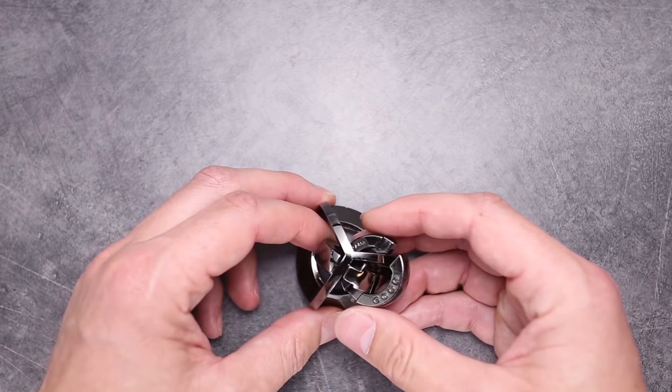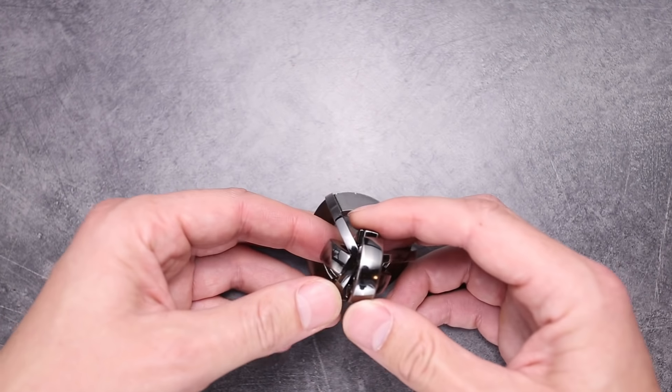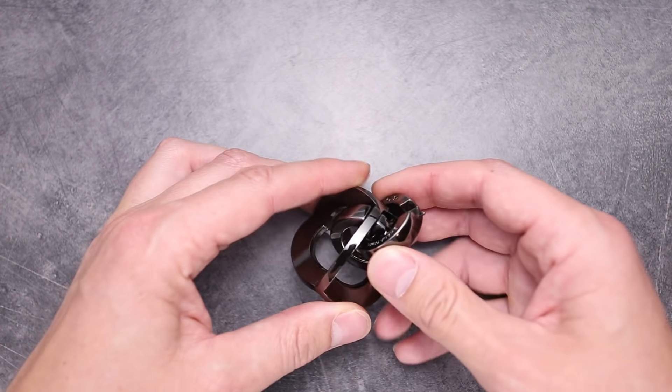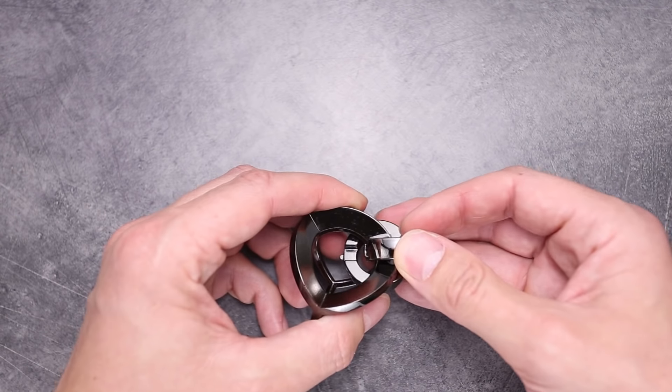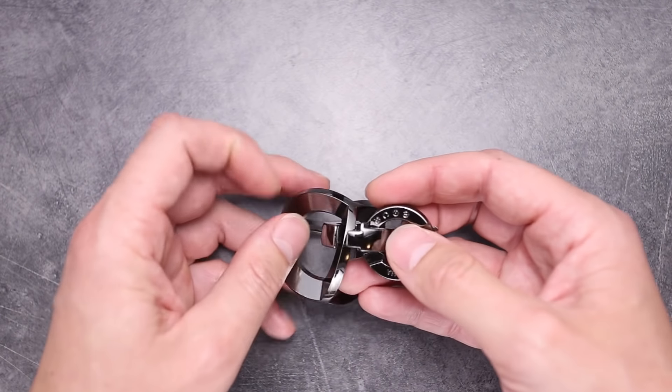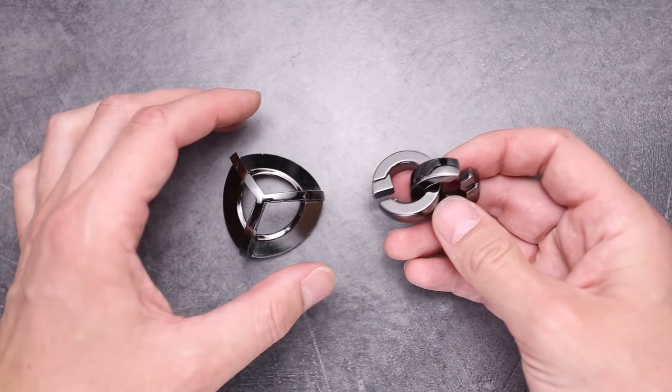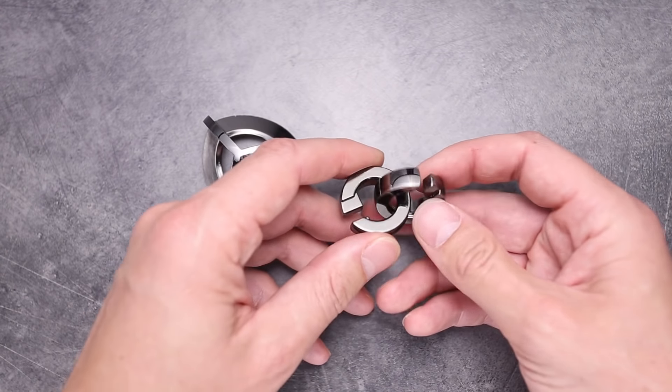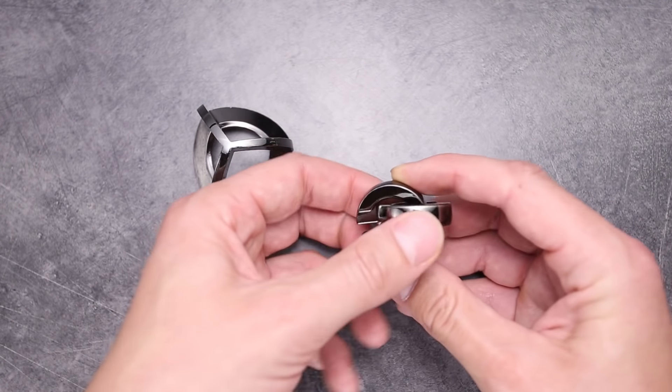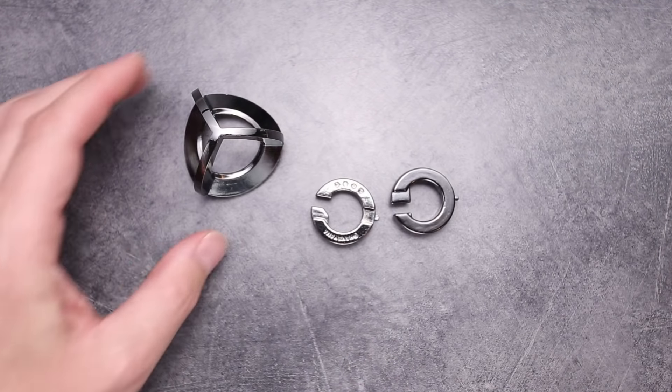So the next move, we have to put the Hanayama piece on the intersection of these edges like this and rotate it so that the cutout will be down there. Next move, we have just to combine the cutout of Hanayama piece and the edge and just slide the Hanayama ring out. And the next move is just to rotate it like this and take it out. And now we have just to disassemble these two rings. To do this, you have to combine them into sphere again and then just rotate one of the pieces and they're disassembled.